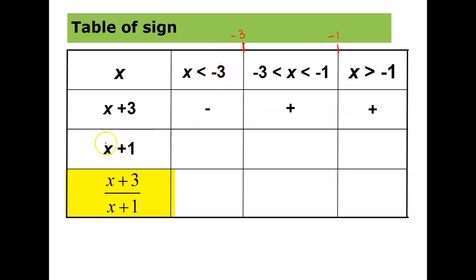We apply the same process to x+1. Substitute negative 4: negative 4 plus 1 equals negative 3, which is negative, so we write negative. For the middle interval, choose a value between negative 3 and negative 1 — you get a negative sign. For the right interval, the sign is positive.